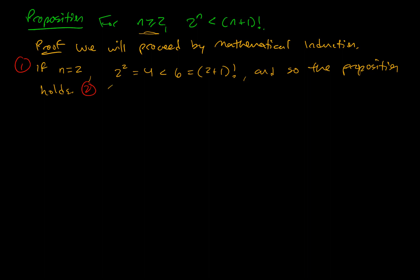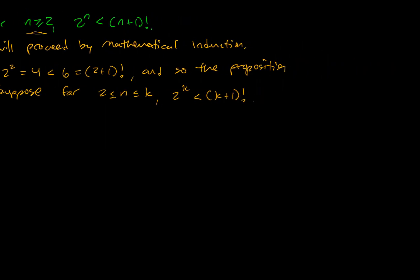Now I need an induction hypothesis. Suppose for 2 less than or equal to n less than or equal to k, 2 to the k is less than k plus 1 factorial. I've got to use that fact to build to the k plus 1 instance. The k plus 1 instance would say that 2 to the k plus 1 is less than k plus 2 factorial.